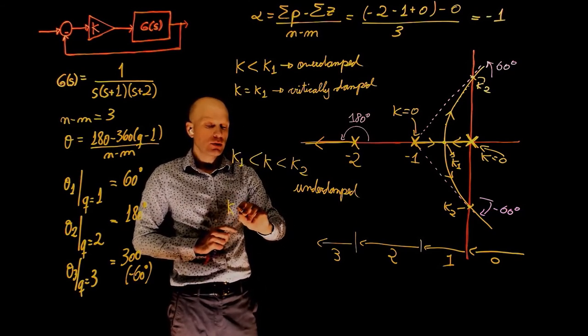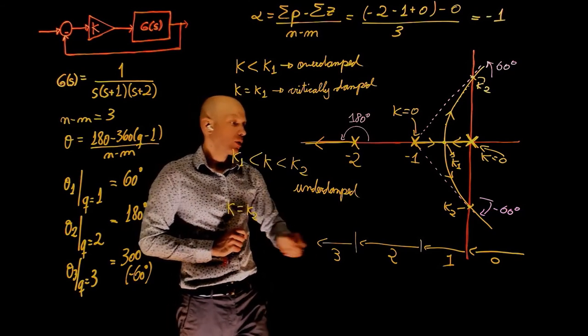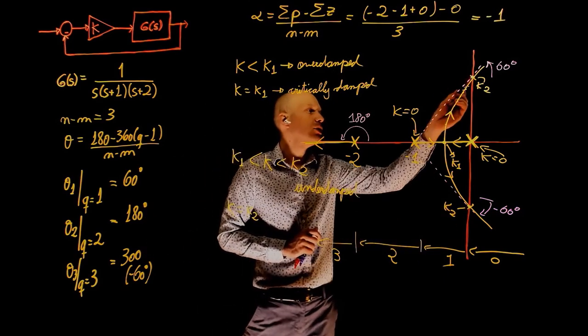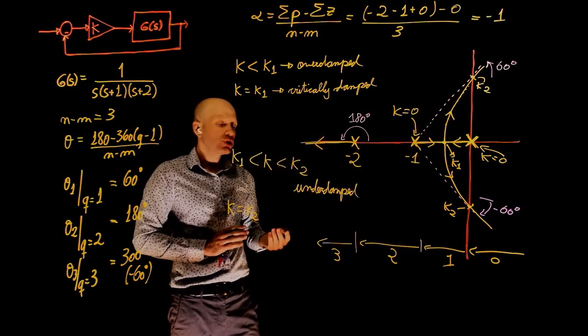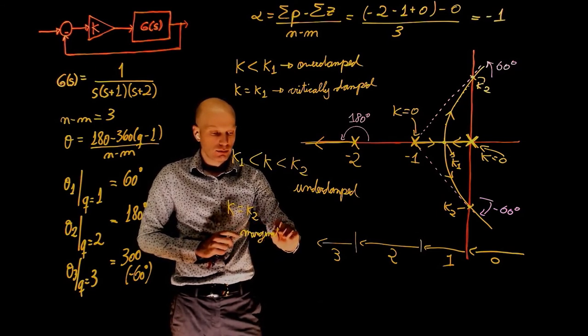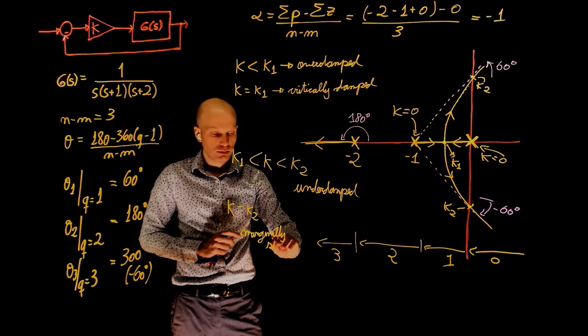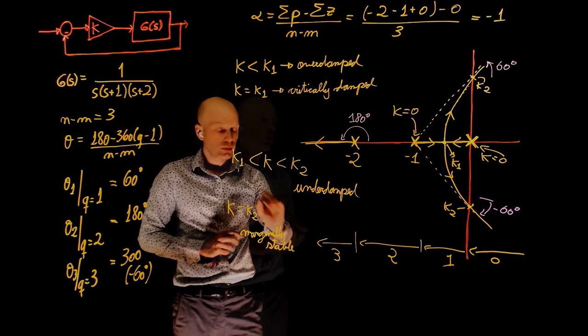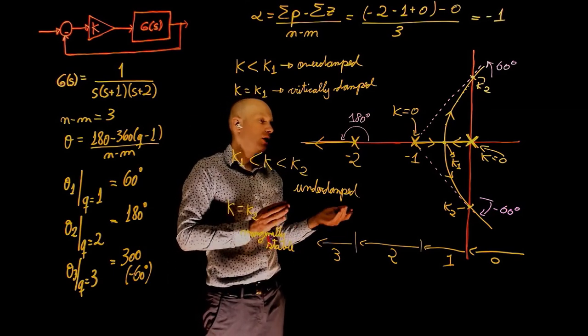When k equals to k2, we are here and here. This characterizes a marginally stable system. Because now the poles are purely imaginary numbers.